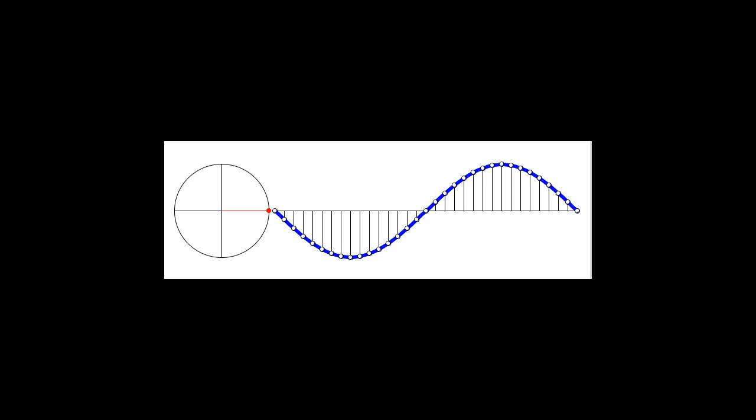Since the particle at the left edge has gone ahead in phase by 2 pi in this time, the phase difference between the particles at the left and right edge is 2 pi.